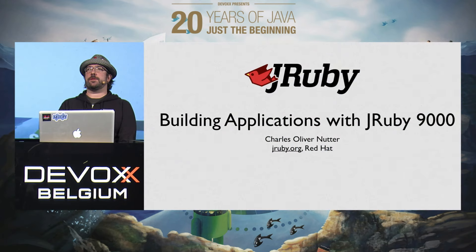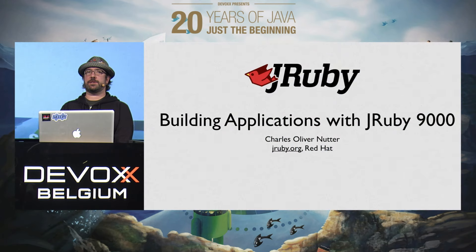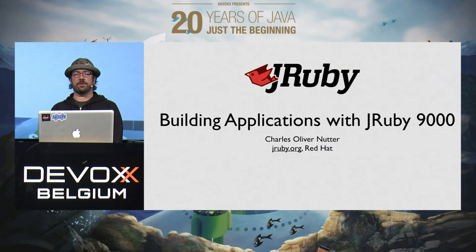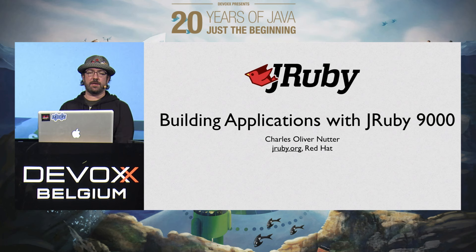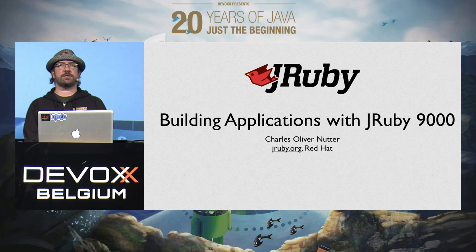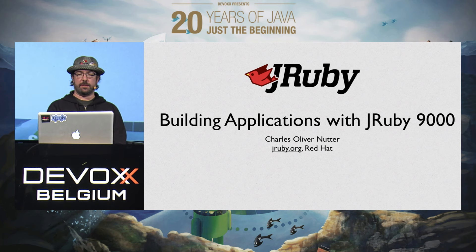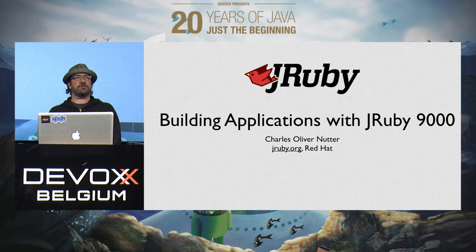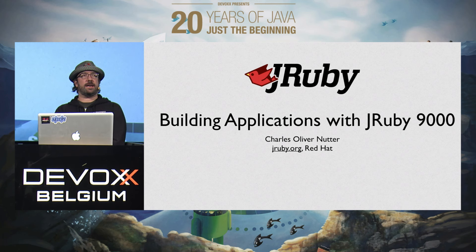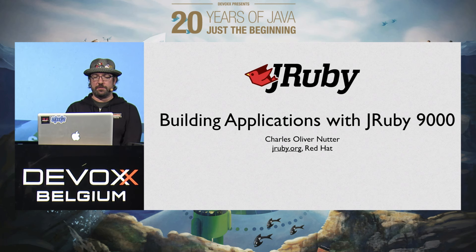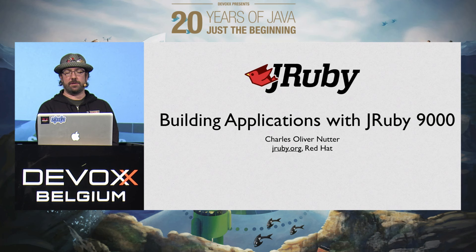I'm sure we'll have some folks filtering in as lunch finishes up, but we'll go ahead and get started. I'm going to talk today about JRuby 9000, which is the new and fast and awesome version of JRuby that we've continued to work on over the years.